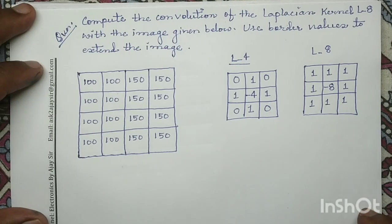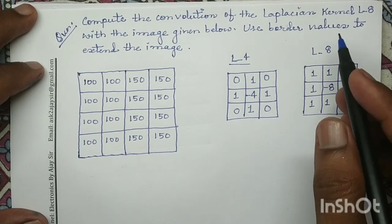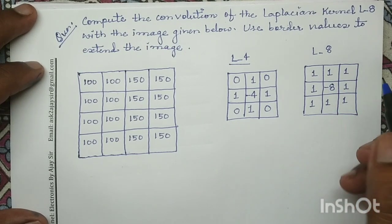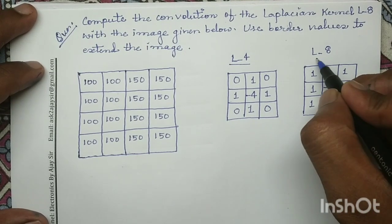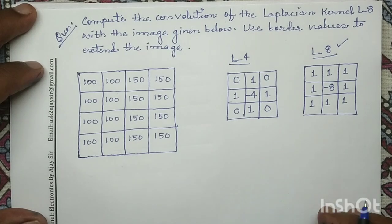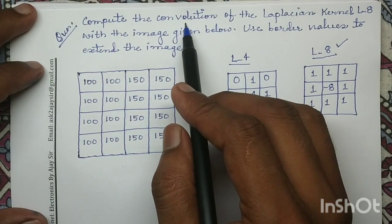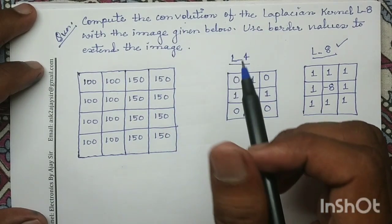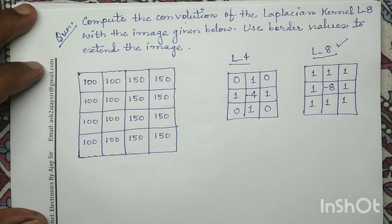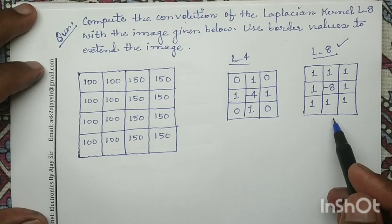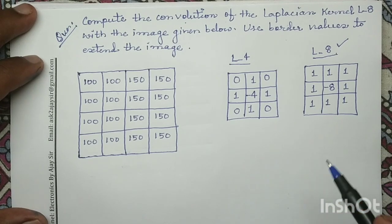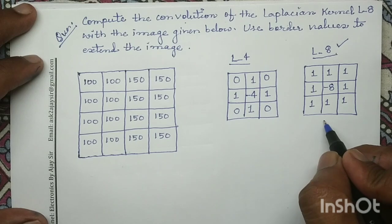In the given question we have to work with the Laplacian L8 mask and perform the convolution operation. In order to perform the convolution operation, first we have to rotate this mask by 180 degrees. We will rotate it in two steps.